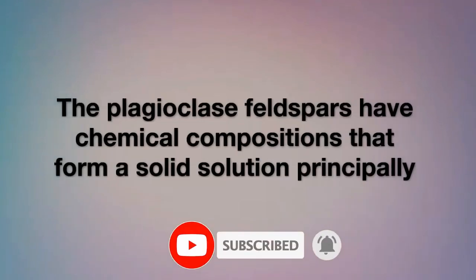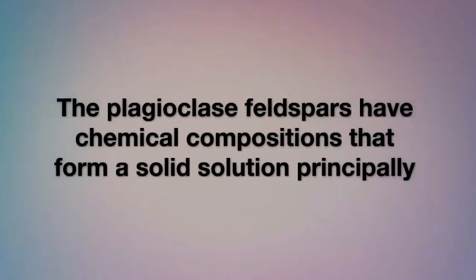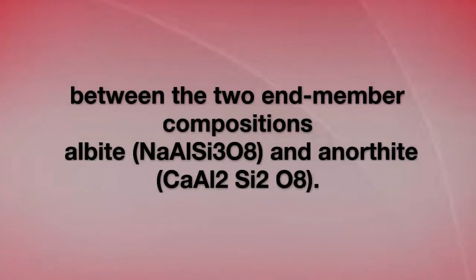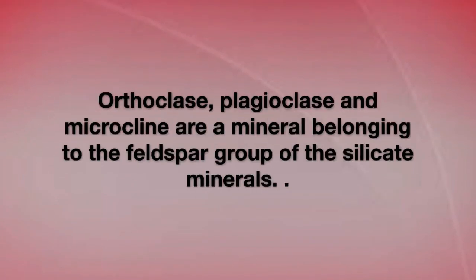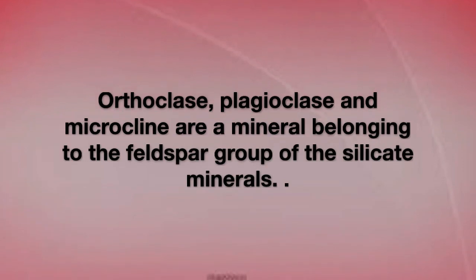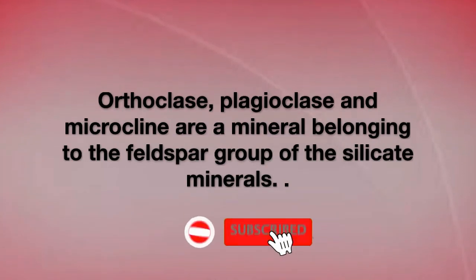The plagioclase feldspars have chemical compositions that form a solid solution, principally between the two end-member compositions: albite (NaAlSi₃O₈) and anorthite (CaAl₂Si₂O₈). Orthoclase, plagioclase, and microcline are minerals belonging to the feldspar group of the silicate minerals.